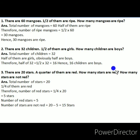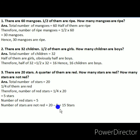There is also a follow-up question: how many stars are not red? Out of 20 stars, 5 are red. So the number of non-red stars is total 20 minus 5 red stars, which equals 15. There are 15 non-red stars.